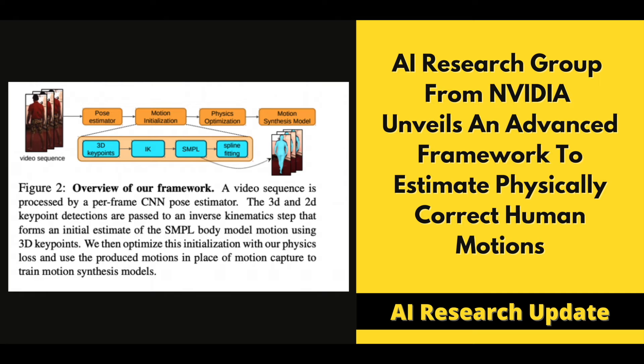The new system, which is more efficient and accurate than previous ones in its class, uses contact invariant optimization to refine noisy image-based pose estimates by enforcing physics constraints through computing forces interacting with each other naturally.